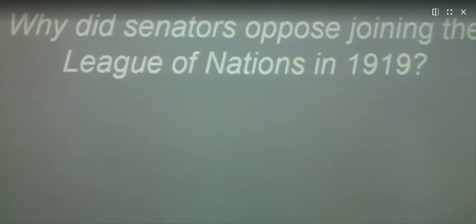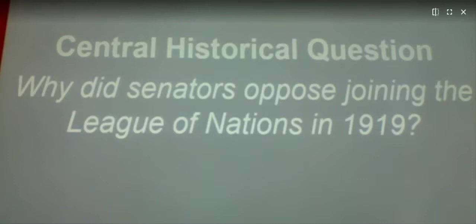So again, our question today is: why did the senators oppose joining the League of Nations in 1919? Was it for legitimate reasons? Did they oppose it because they thought it was unconstitutional or not in the best interest of the United States? Or is it more based on political affiliation — are they trying to prevent Wilson from getting a win because at the time he was a Democrat, whereas most members of Congress were Republicans? That's our question for today.